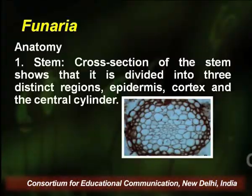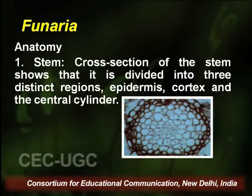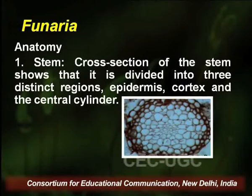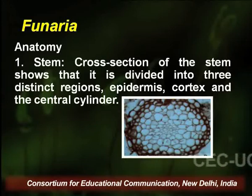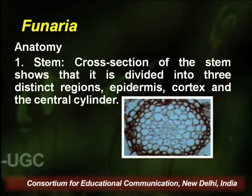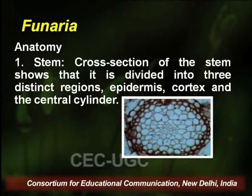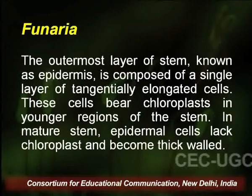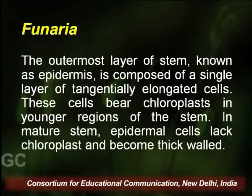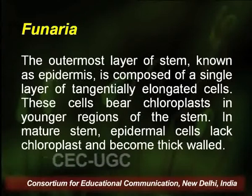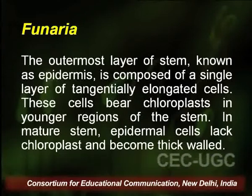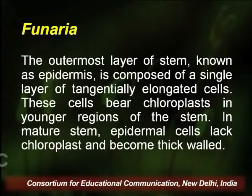When discussing the anatomy of Funaria, we consider the anatomy of the stem and leaf. In a cross-section of the stem, Funaria shows three distinct regions: the outermost epidermis, the middle cortex, and the central cylinder. The outermost layer — the epidermis — is composed of a single layer of tangentially elongated cells bearing chloroplasts in younger stem regions.